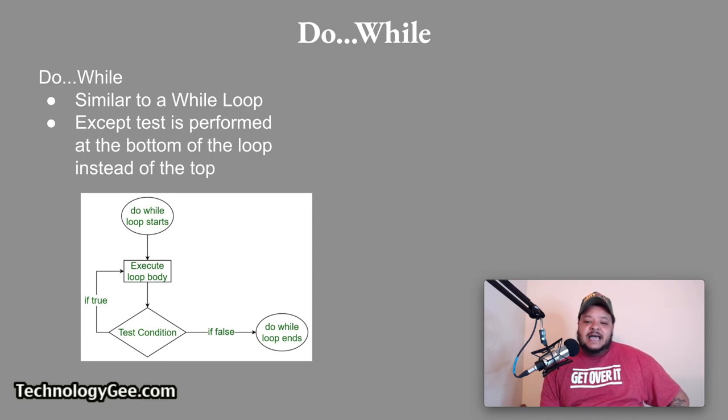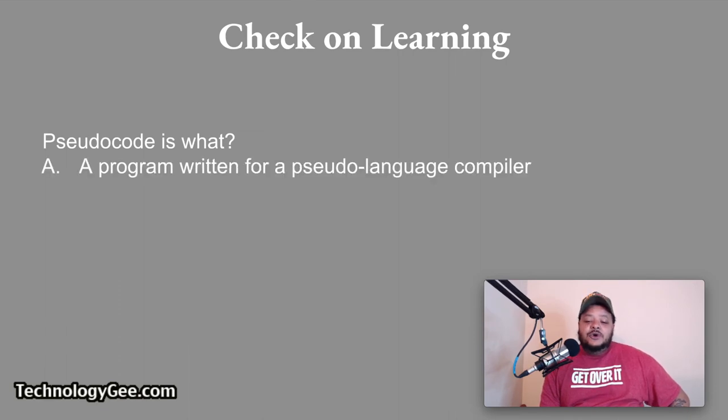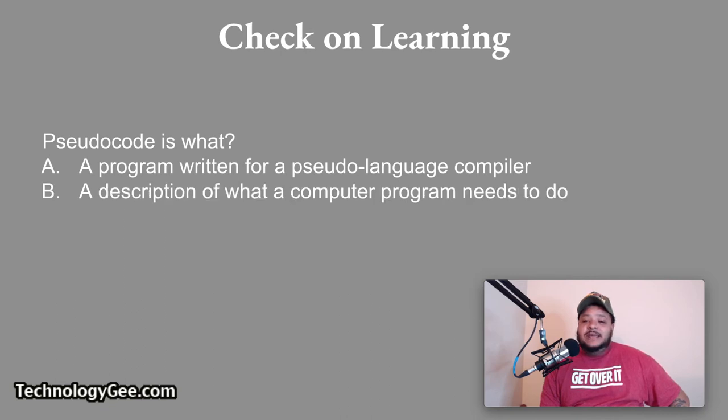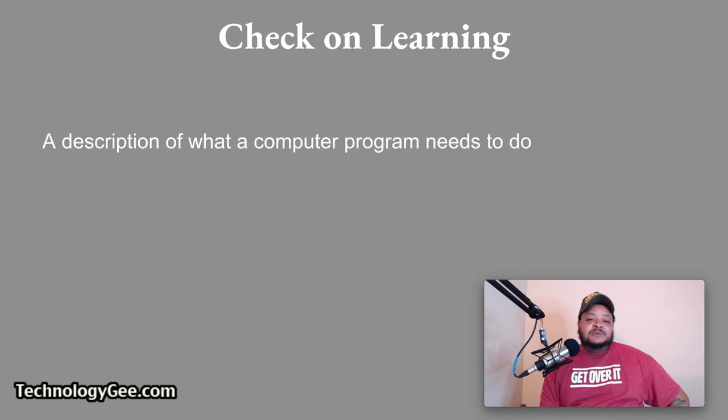All right. So that's a real quick class here, ladies and gentlemen. So let's go ahead and get into some of this check on learning. So question number one, pseudo code is what? Is it a program written for a pseudo language compiler? Is it a description of what a computer program needs to do? Is it a translation of machine language? Or is it another name for a flowchart? So what is pseudo code? Correct answer is pseudo code is a description of what a computer program needs to do. So think of it as a rough draft that you are writing out essentially step by step describing how your computer program is supposed to function using plain English.